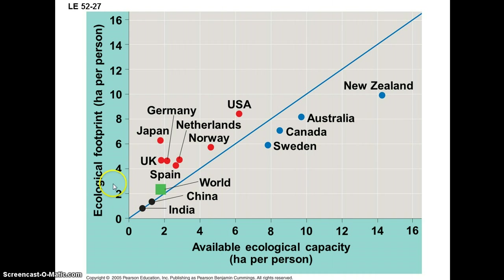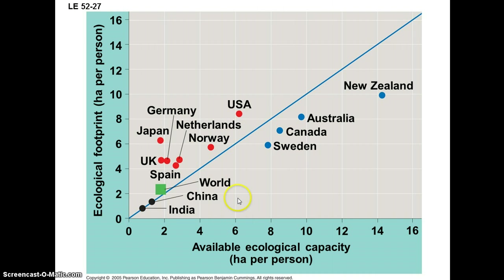Here's the footprint per person in hectares per person. You can see the United States way up there — we use a lot of resources to support the typical American. This also shows the capacity of that country to supply those resources. You can see we're in the red, using resources at a greater rate than can be supplied by our own country, and so we tend to import a lot of stuff.